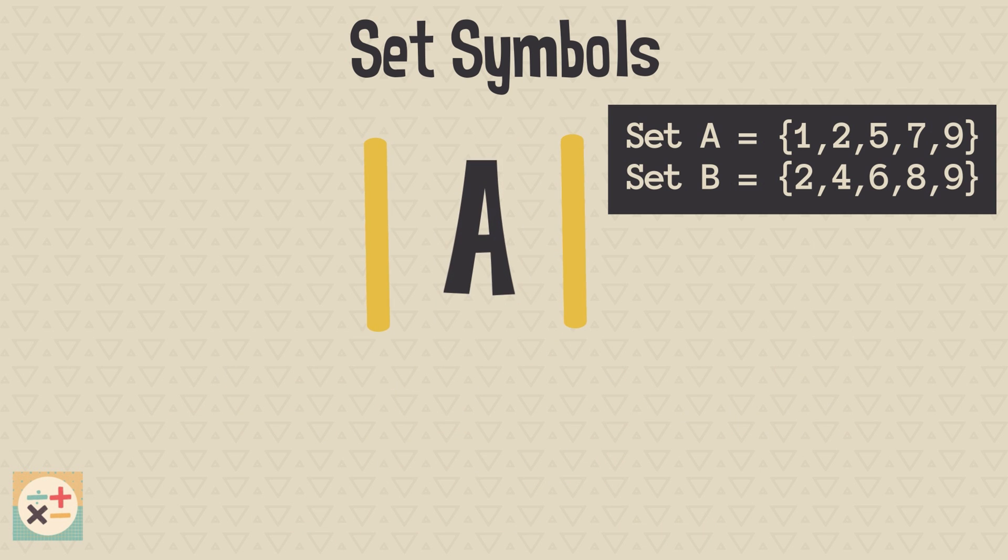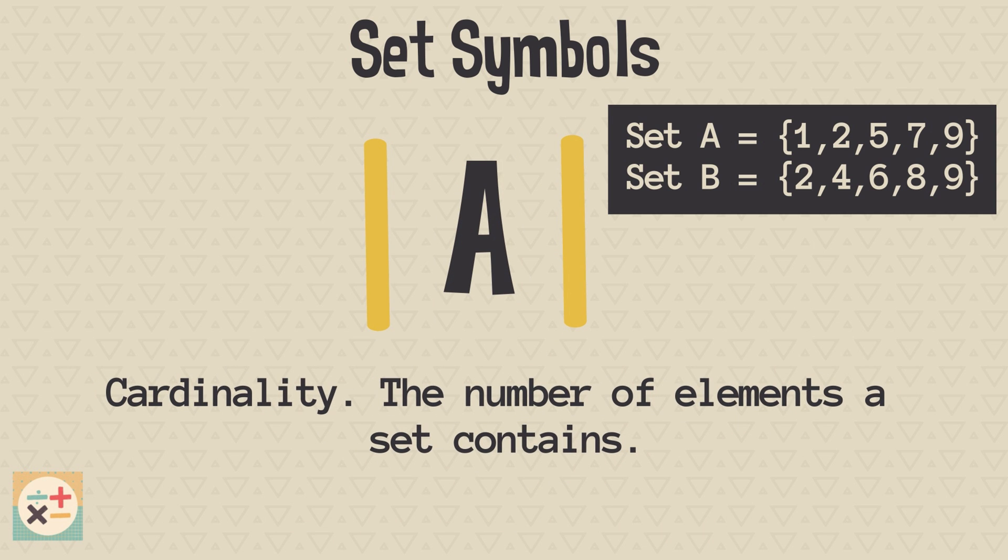Next up we have the symbol which represents cardinality. Cardinality is a fancy word for the number of elements in a set. For example, the cardinality of set B is 5, as there are 5 elements in set B.